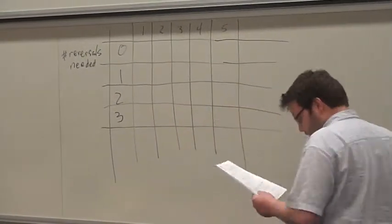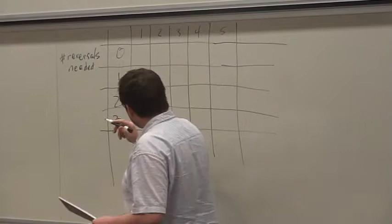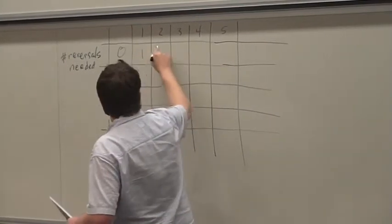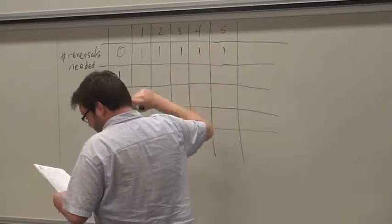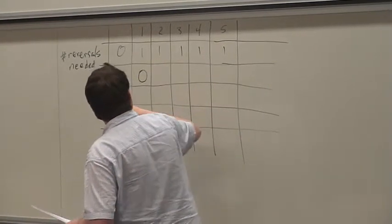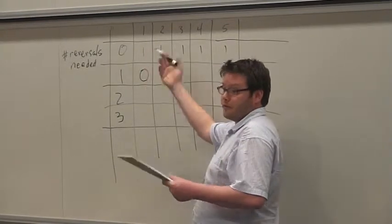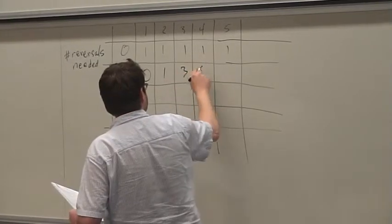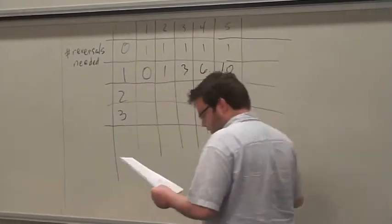Okay, so you can make this chart, and it would look like, well, there's one permutation that takes zero reversals to sort, which is the identity of each length. For taking one reversal to sort, there's none of length one. Sort everything length one, no reversals. I think there's one, three, six, ten.